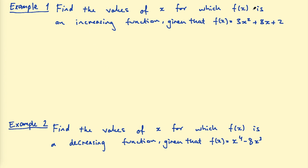Example one: find the values of x for which f(x) is an increasing function, given that f(x) = 3x² + 8x + 2. The first step is to find the derivative. Using the power rule on each term: multiply the coefficient by the exponent, so 3 × 2 = 6, giving 6x. For 8x, multiply the coefficient by 1 (the power), which gives 8, and x to the power 0 is 1, so that term is just 8. And the constant derives to 0. So f'(x) = 6x + 8.